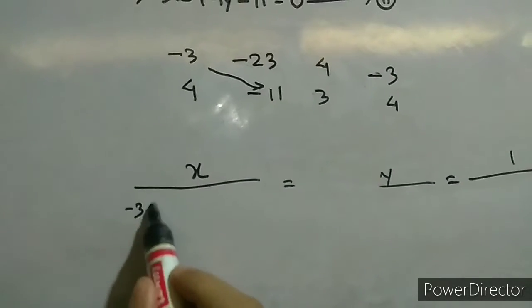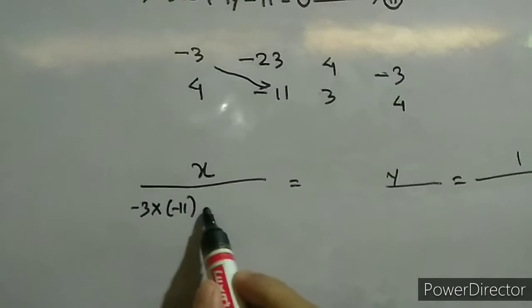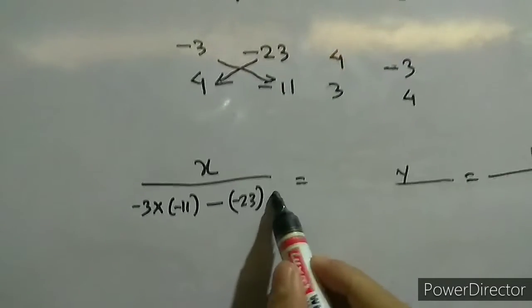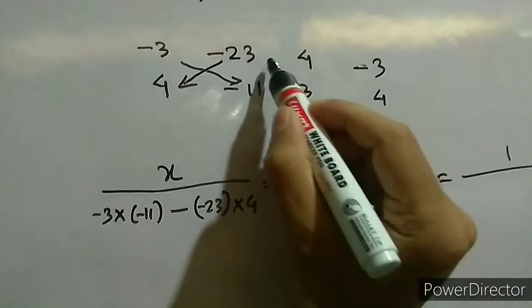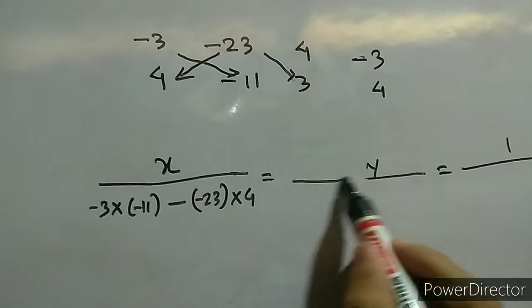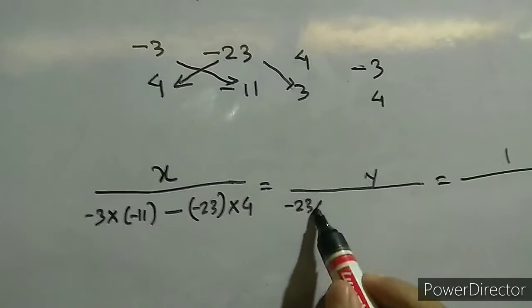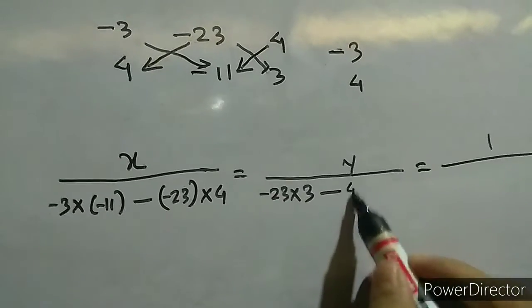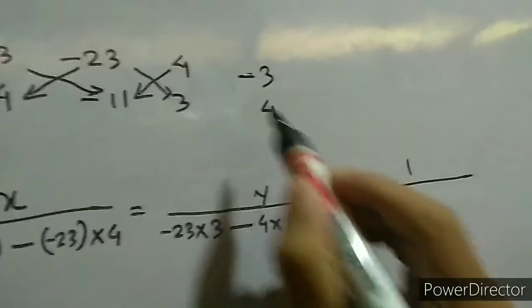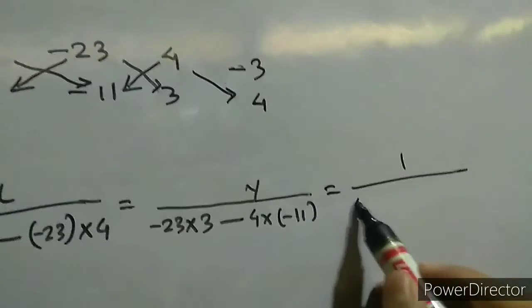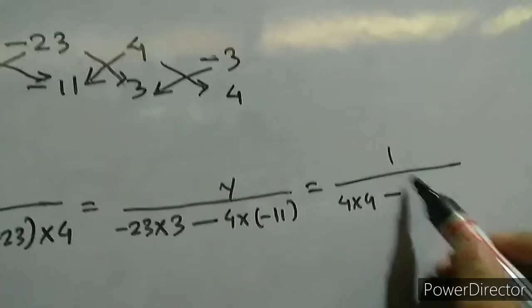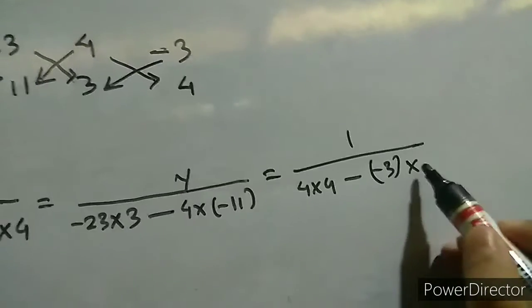Now we multiply: minus 3 into minus 11, then minus 23 into 4. Next, minus 23 into 3, then minus 3 into... continuing with the cross multiplication products for both x and y terms.